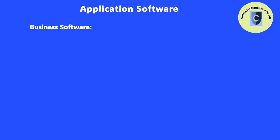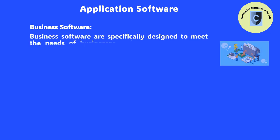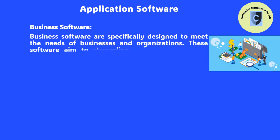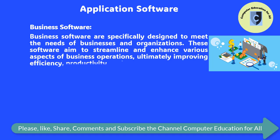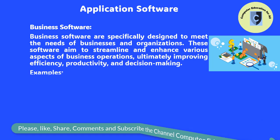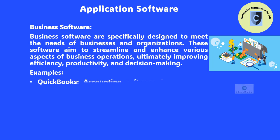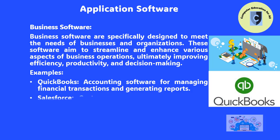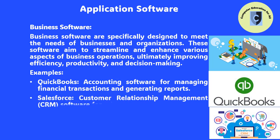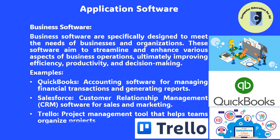Business Software: Business software is specifically designed to meet the needs of businesses and organizations. These software aim to streamline and enhance various aspects of business operations, ultimately improving efficiency, productivity, and decision-making. Examples include QuickBooks (accounting software for managing financial transactions and generating reports), Salesforce (CRM software for sales and marketing), and Trello (a project management tool that helps teams organize projects).